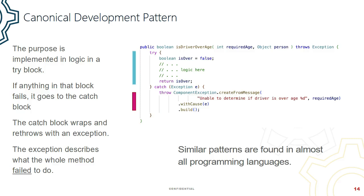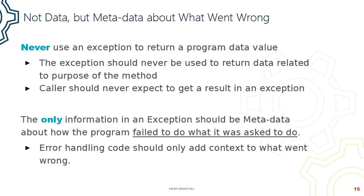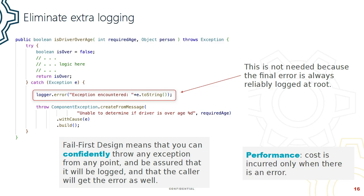Here's how that development pattern is implemented in Java. You have a big try block for the normal code, and then a catch block that catches everything and adds to it — it wraps the exception with more information about what was going on at the time, and throws that. A caution: it's a bad practice to return data with an exception. You should never use exception handling to return program logic data to a caller. What we're using the exception for is to return metadata about how the program failed to do what it was asked to do. Because you can count on the logging and display at the root-most level, you don't need to spread log statements through the code. You can count on it being done at the end, which makes it easy to throw an exception from any point in the code and be assured that the user will receive it.